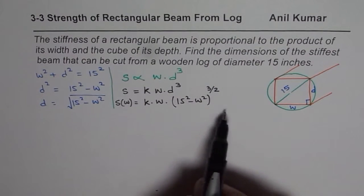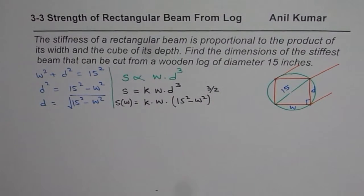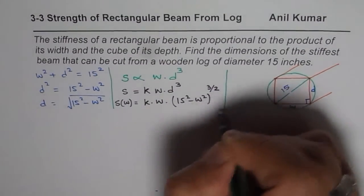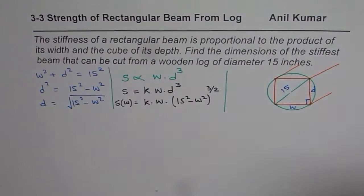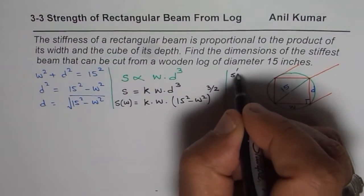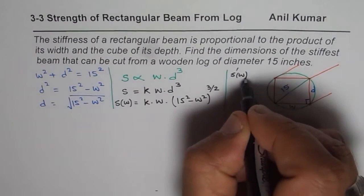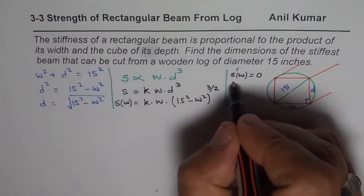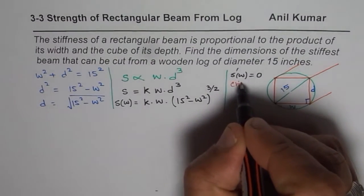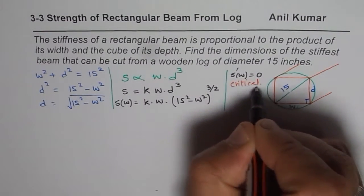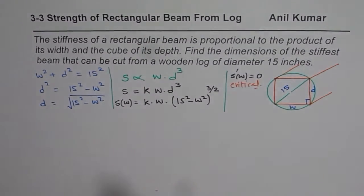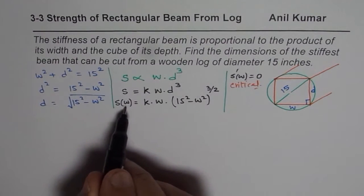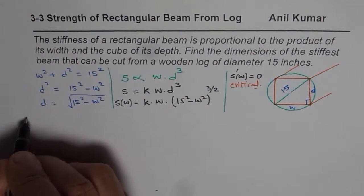Once we have this relation, the strategy is to find the derivative and equate it to zero so that we get the critical number. So let us begin to solve. We have stiffness in terms of width as this expression — what is the derivative?